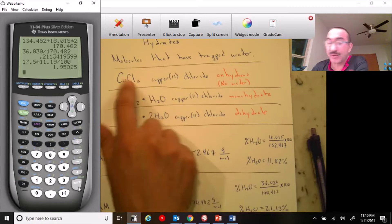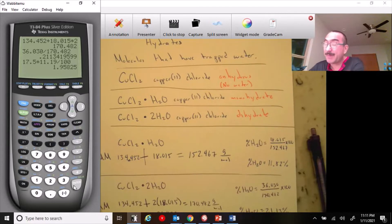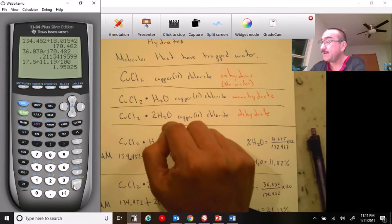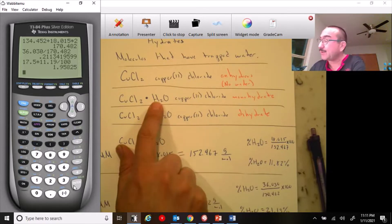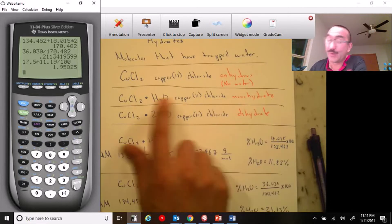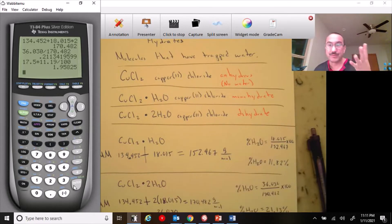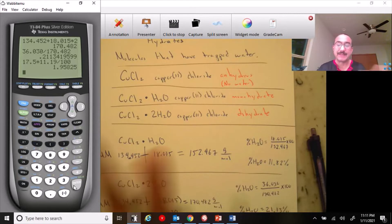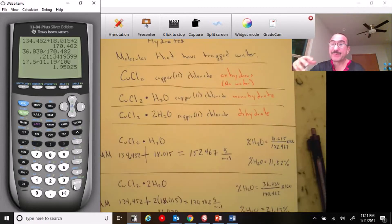So we call this anhydrous. Anhydrous means no water, right? But this copper to chloride, it could actually trap water. It could trap one, two, three, four, five molecules of water. If it's one, we would call it copper to chloride monohydrate, one water. If it had two molecules of water, we would call it copper to chloride dihydrate. Three molecules of water, it would be trihydrate, four tetrahydrate, etc. That's the same rule that we have for covalent with the prefixes. And again, so these hydrates are molecules that have trapped molecules of water inside them.